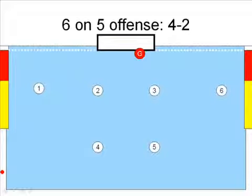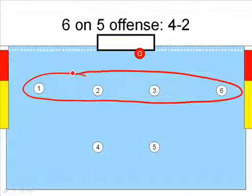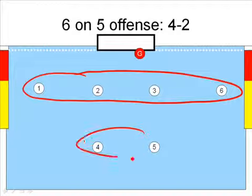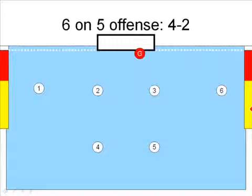It's called a 4-2 setup because there are four players along the 2-meter line and two players up top. This setup will force one defender to have to cover between two players.